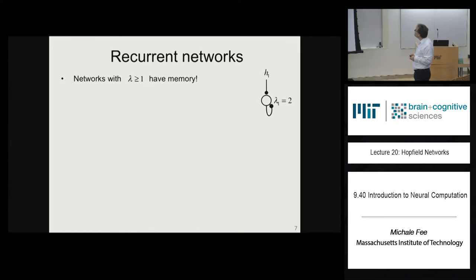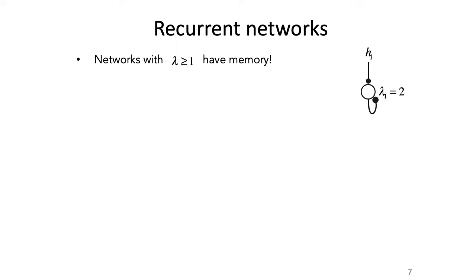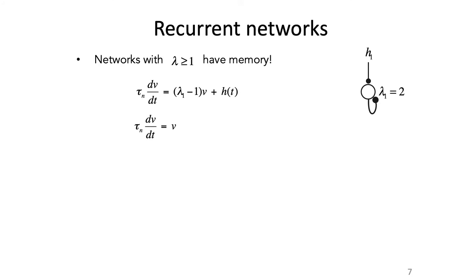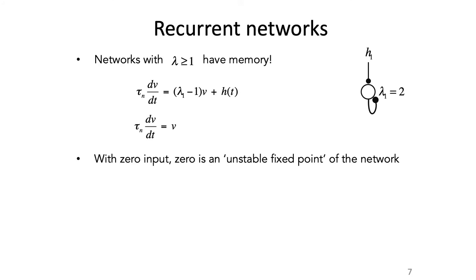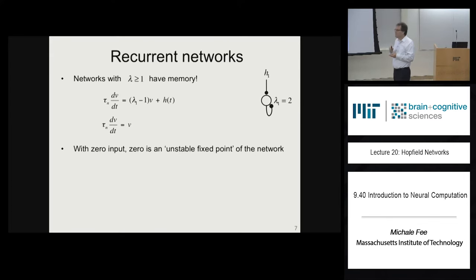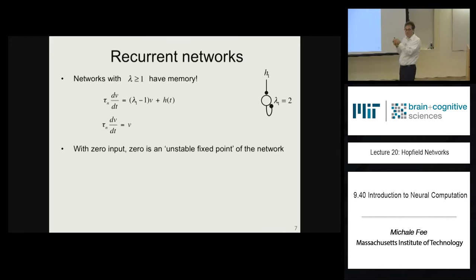Let's start with a recurrent network with lambda greater than 1 — specifically an autapse with lambda equal to 2. Rewriting the equation gives tau dv/dt equals (lambda minus 1) times v plus h. You can see that v equals 0 is an unstable fixed point: if v equals 0, then dv/dt equals 0, so it's a fixed point. But if v deviates slightly from 0 in the positive direction, dv/dt becomes positive and the firing rate runs away.